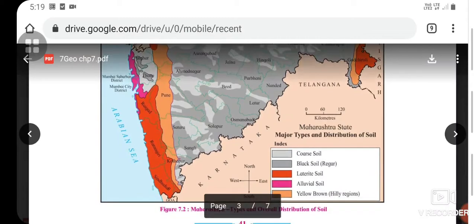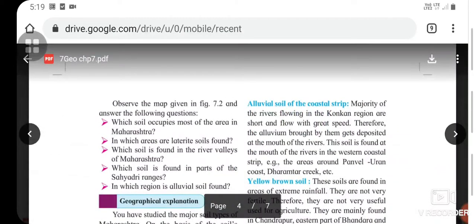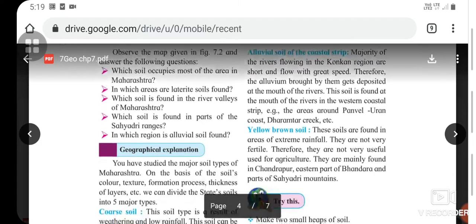This is the map of Maharashtra showing the types and overall distribution of soil. You can have a look at the map and answer the following questions: Which soil occupies most of the area in Maharashtra? In which areas are laterite soils found? Which soil is found in the river valleys of Maharashtra? Which soil is found in parts of the Sahyadri ranges? In which region is alluvial soil found?